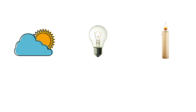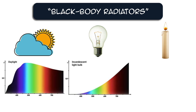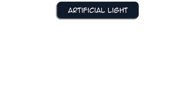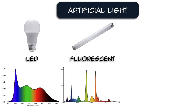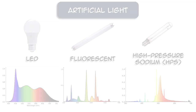Ideal light sources, called black body radiators, have a smooth, continuous curve across the visible color spectrum. But artificial light is created from many narrow peaks at particular colors. So the question is: how does this affect the appearance of illuminated objects?